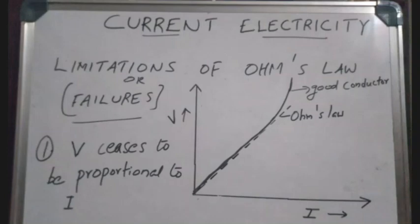Using H equal to I squared RT, heat energy is used to analyze current. The current and resistance are related, and from V by R equal to I, we get I equal to V by R.